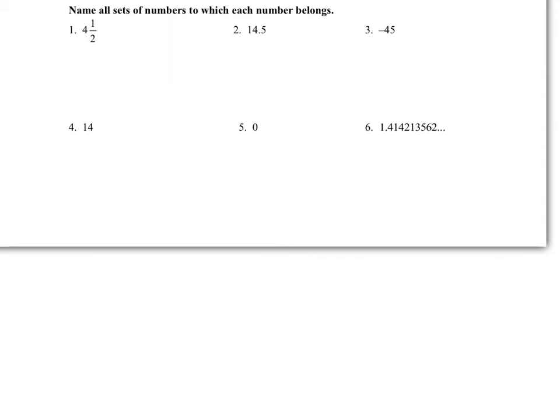So let's look at 4 and 1 half. Now, 4 and 1 half can't be considered whole. It also can't be considered an integer because it has a fractional part. So the only group that this would fall under would be rationals. It does fall under rationals because it would be 9 over 2 in fraction form.